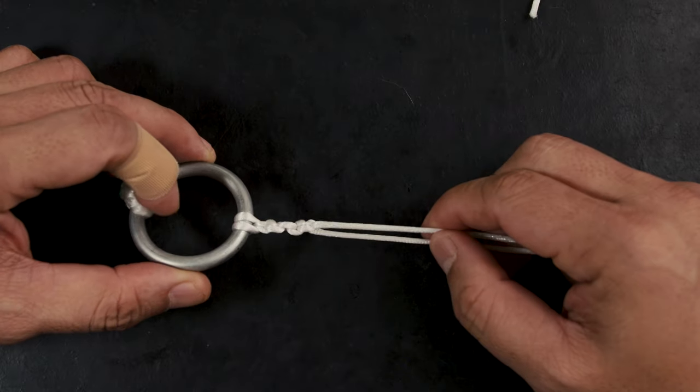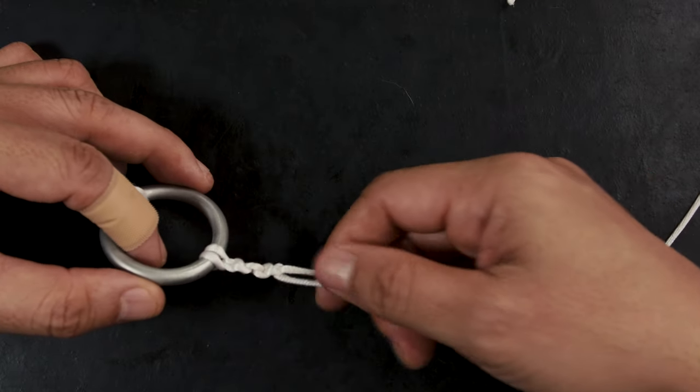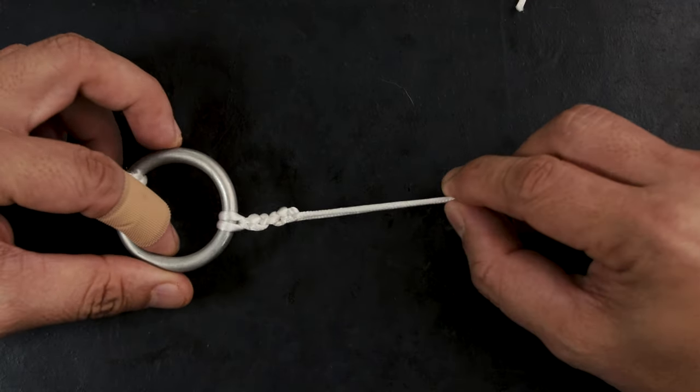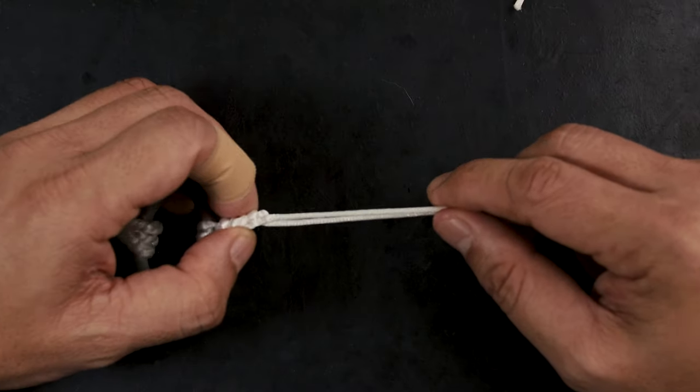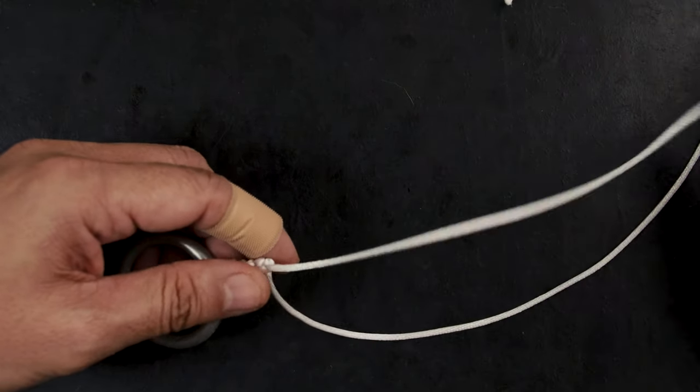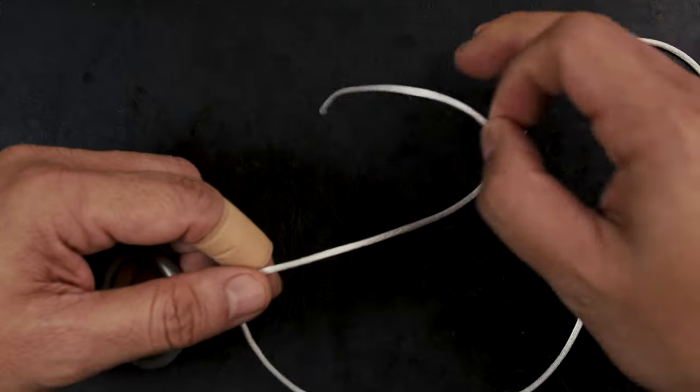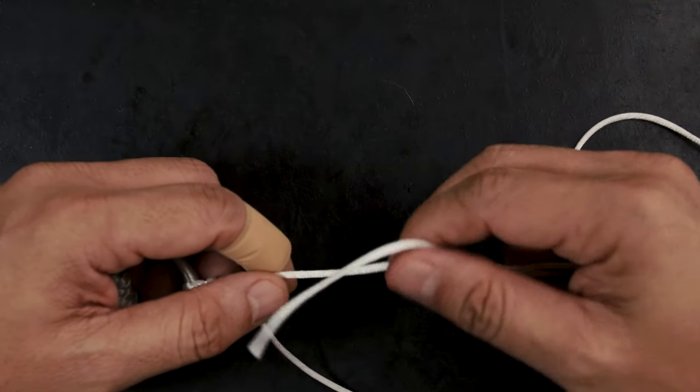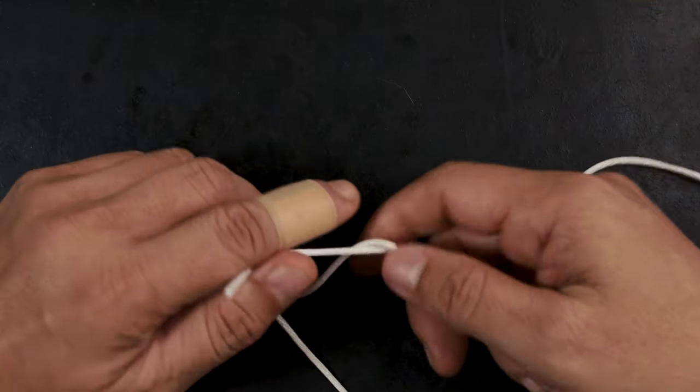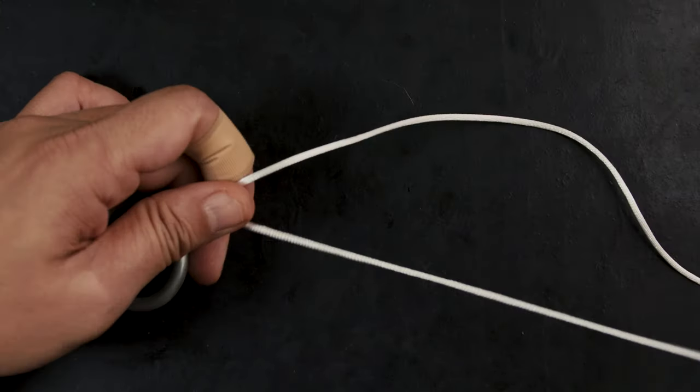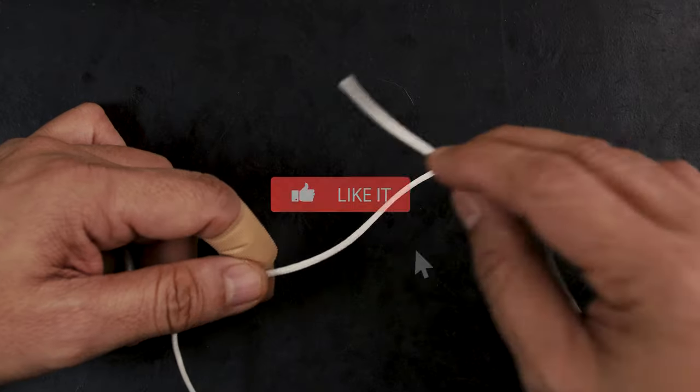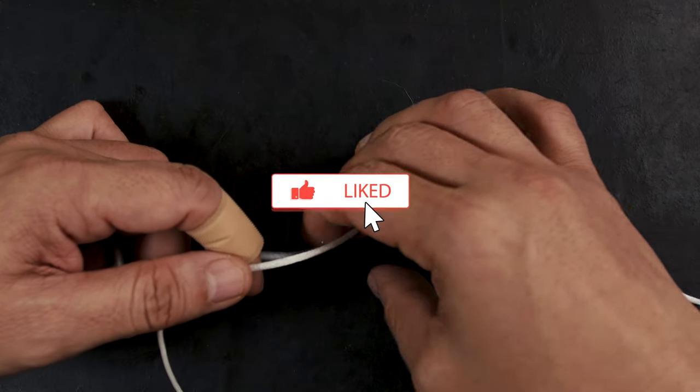Now once you get it done to the length that you want—sometimes you want it to be an inch or two inches, or you can do this however long you want—the last step is to actually have two or three half hitches. That's the normal way. For me, what I do is make sure the tag end is inside of the knot.